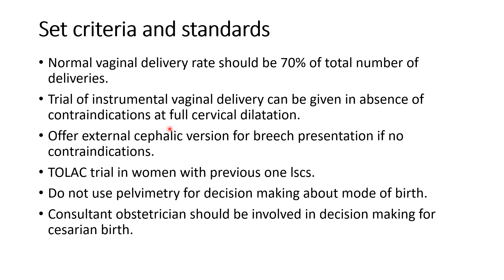The second step was to set criterion standards for our ward. We compared the rate and number of cesarean sections performed in a year against our set criterion standards. The standard was that the normal vaginal delivery rate should be 70% of total number of deliveries. This was according to the national and international criteria followed by the Royal College and WHO guidelines — the normal delivery rate should be 70% of total deliveries. These are not criteria we made ourselves; we are following international criteria and standards.